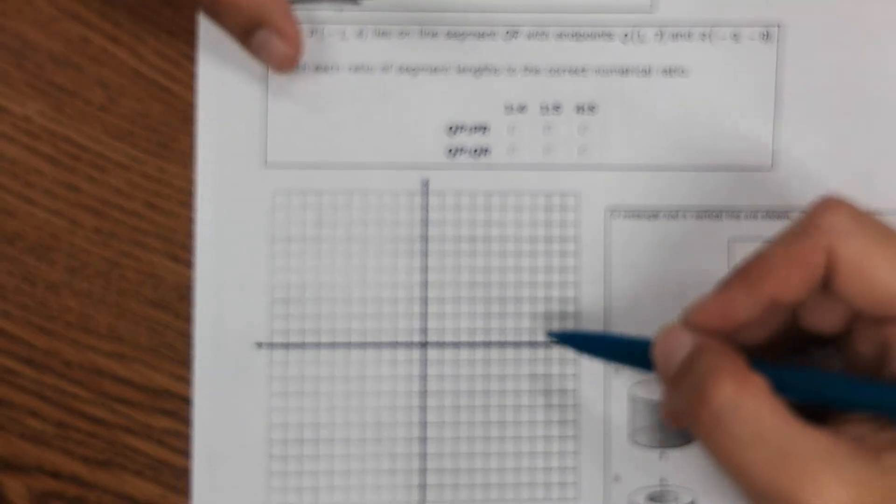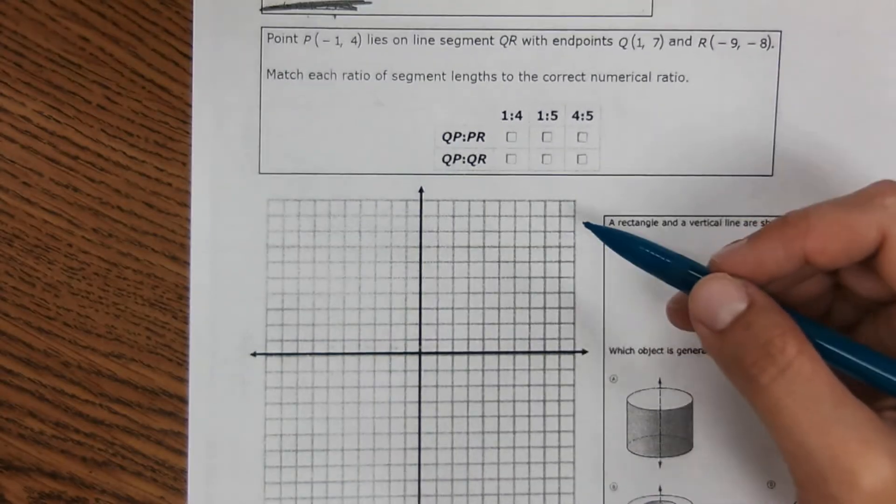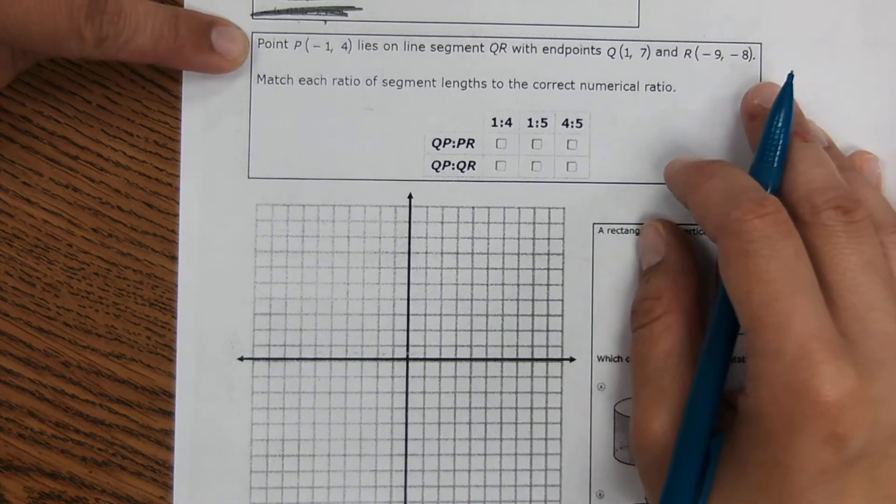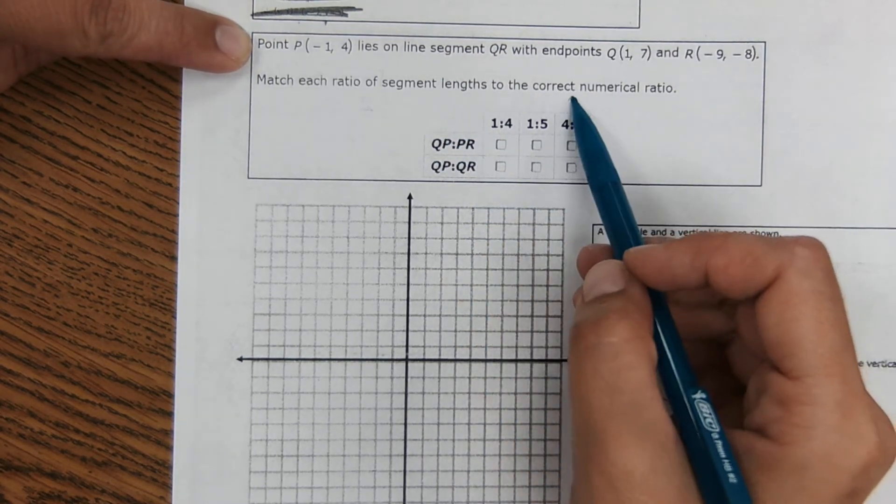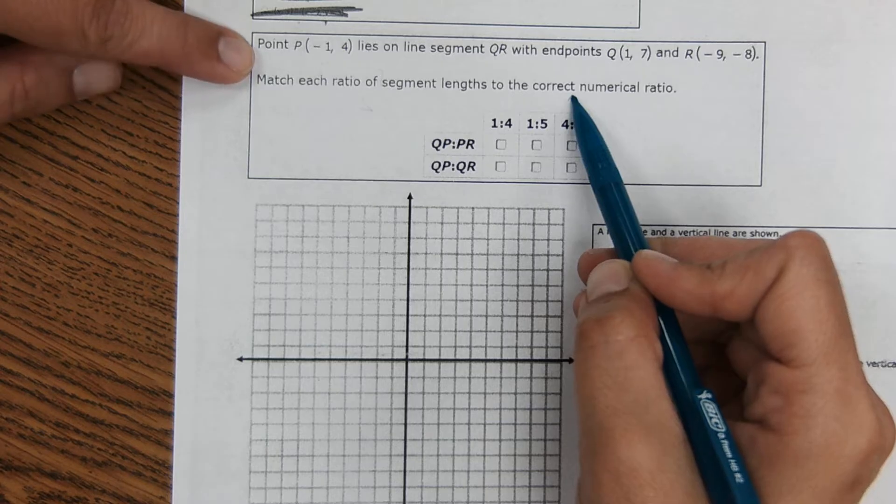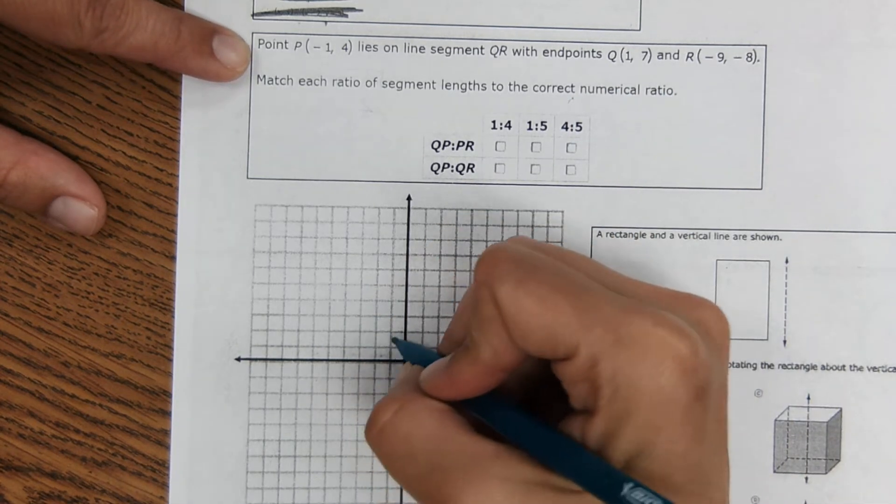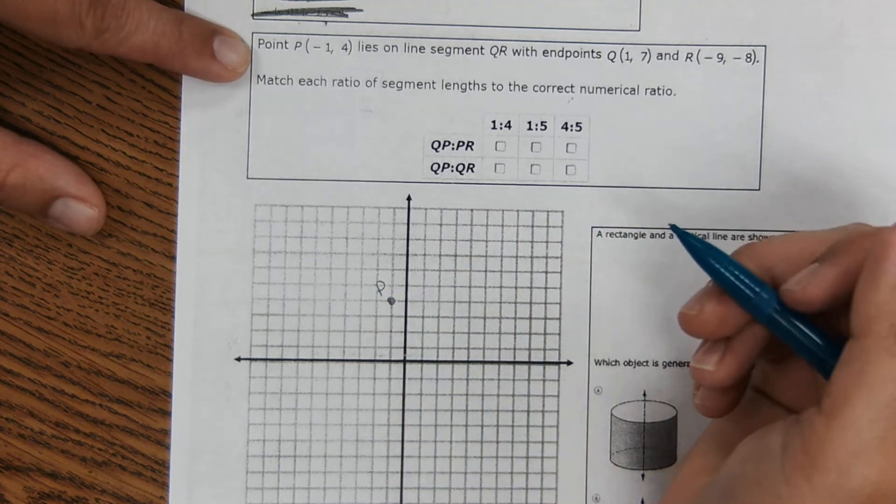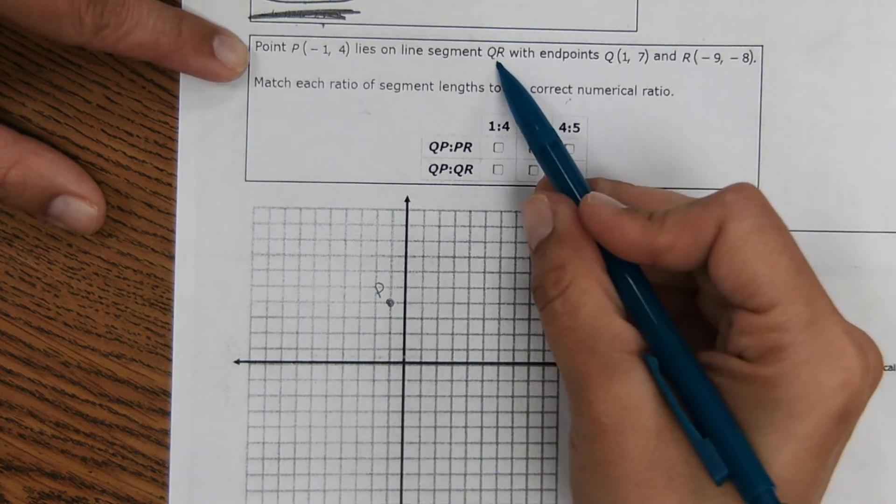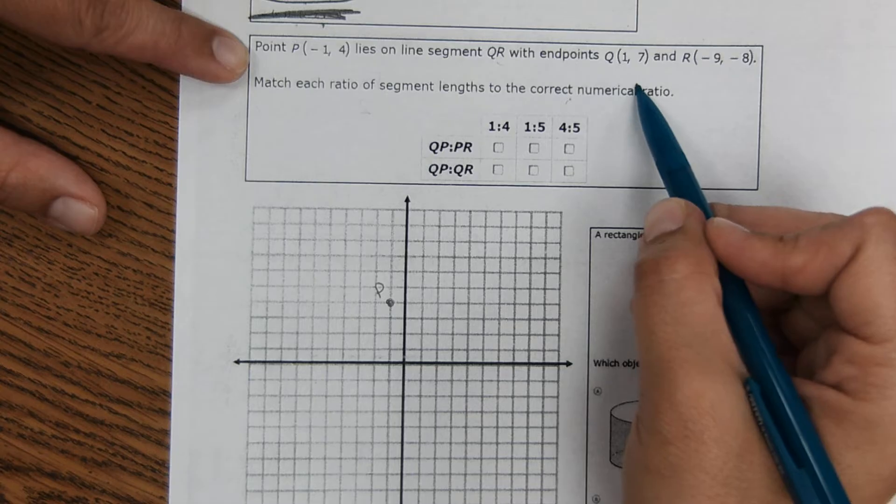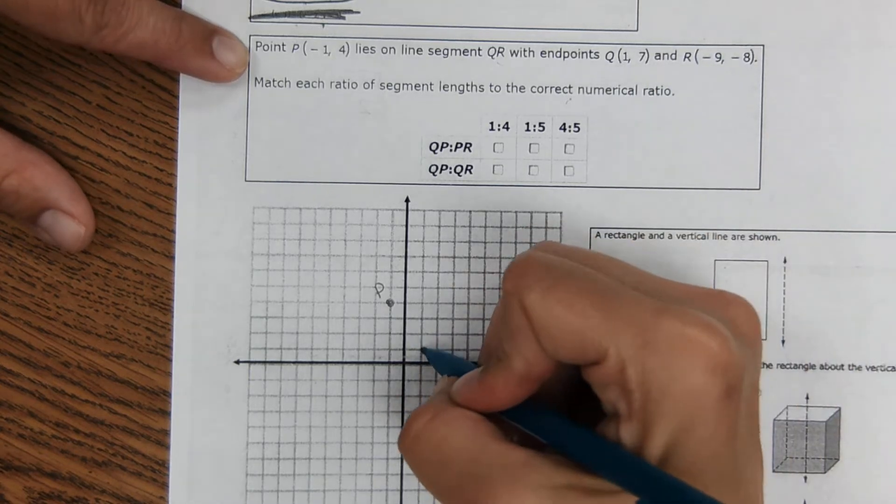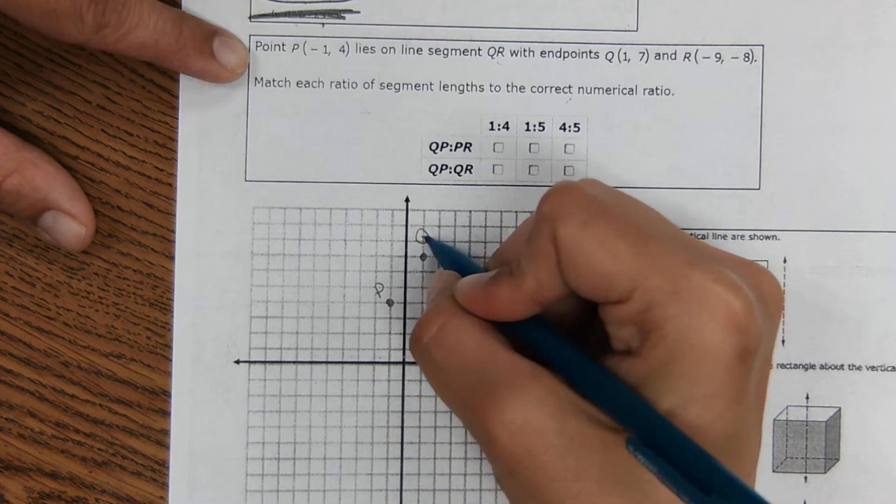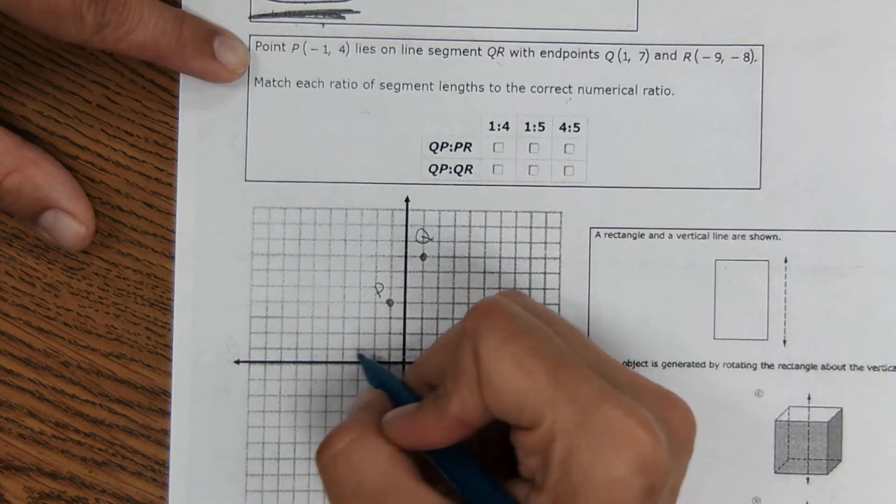I put this graph paper on here so we could graph it. We haven't seen this for a minute, probably since the beginning of the year. I'm going to graph the points to get started. So point P is at negative 1, 4. Q is at 1, 7. And then R is at negative 9, negative 8.